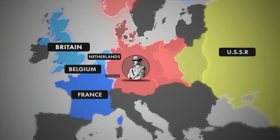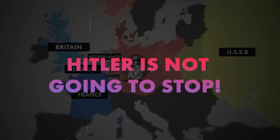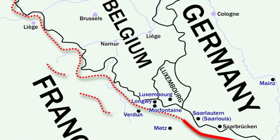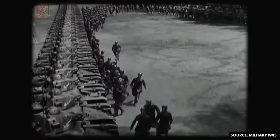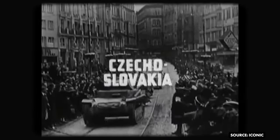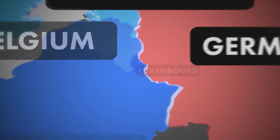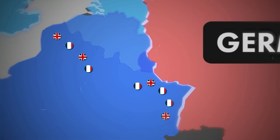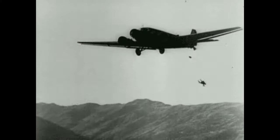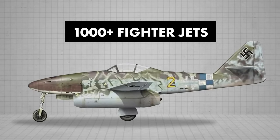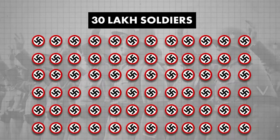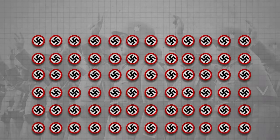Everyone could see that Hitler didn't intend to stop. France had built the Maginot Line because they were worried Hitler would attack — they lined their troops along this wall to protect the country. On the borders of Belgium and Luxembourg, Allied forces were stationed to protect them. Hitler used his trademark Blitzkrieg strategy: more than 1,000 fighter-bomber airplanes and around 3 million soldiers on the ground. This was known as the Battle of France. The German troops were divided into three groups: A, B, and C.